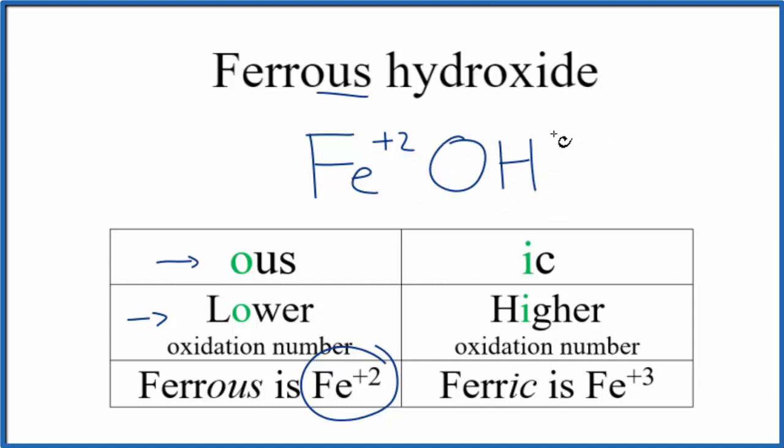So we don't have our charges balanced. We need to do that to write the formula here for ferrous hydroxide. We can use the crisscross method: put the 2 here, put the 1 here.